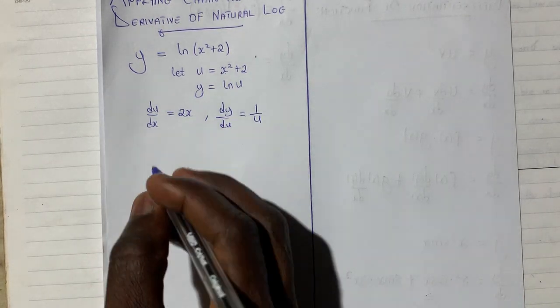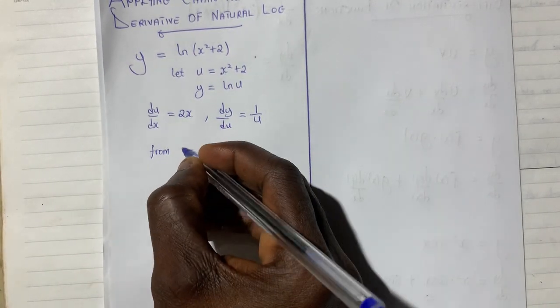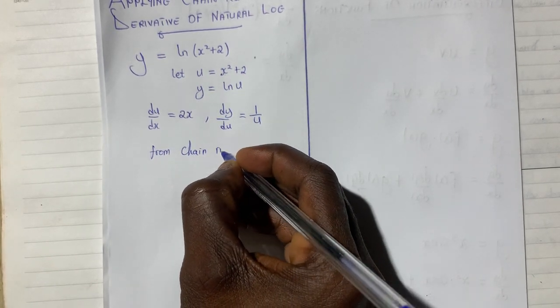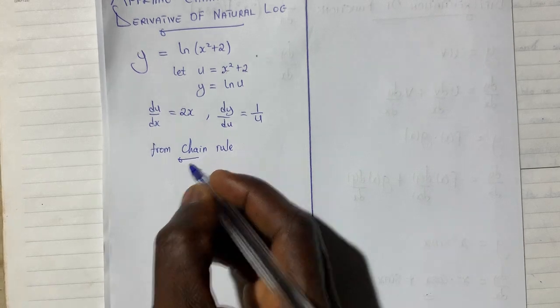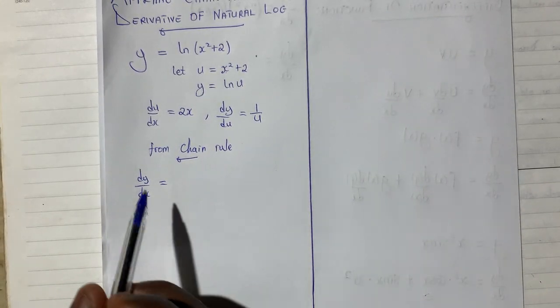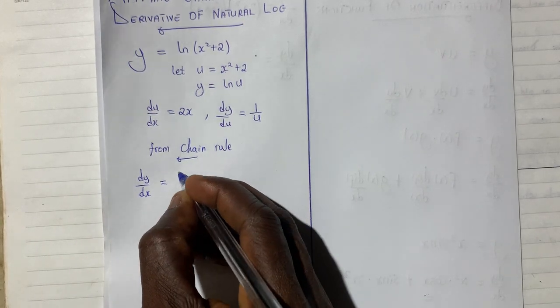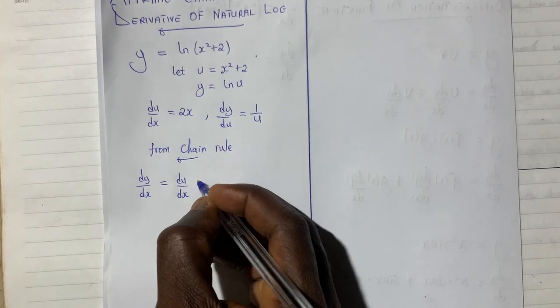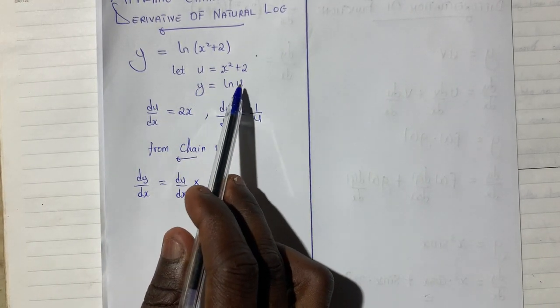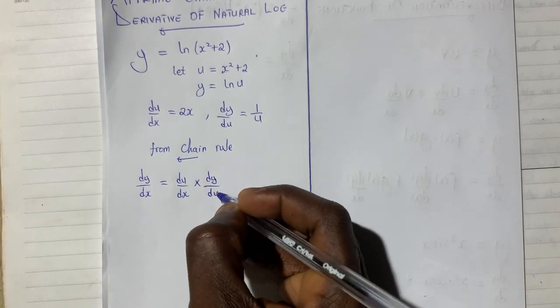From this step, we apply the chain rule. From chain rule, I will say that dy dx giving us, what was the first thing we differentiated? dy dx.